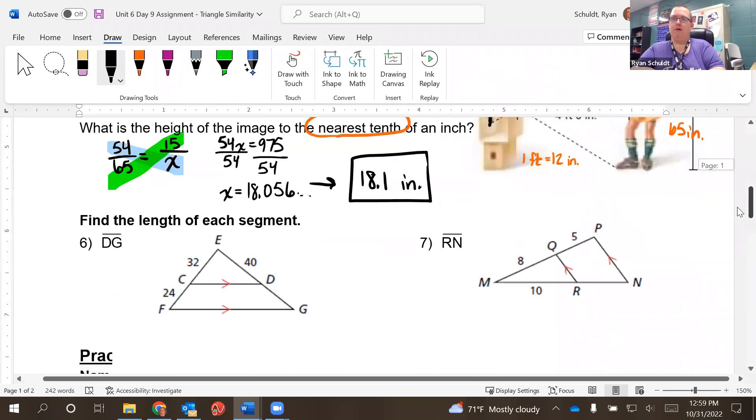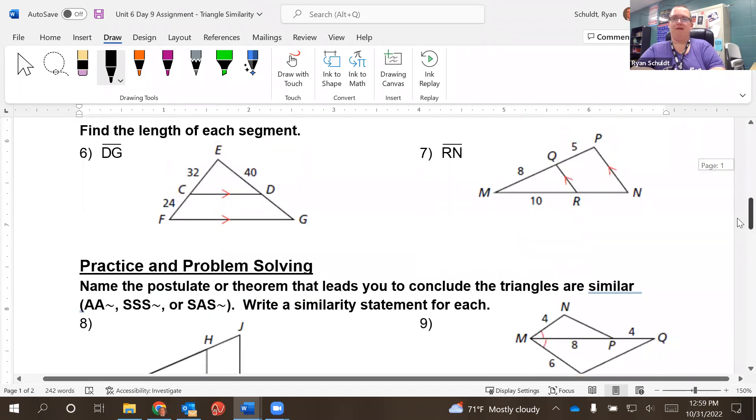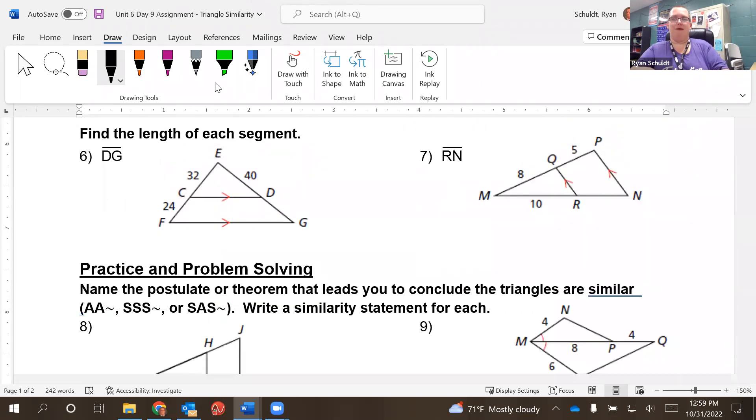Okay. Let's see. Number six. Find the length of the segment. So six asks us to find the length of DG. Okay. Remember, this is where they're proportional. So we can say 32 over 24 equals 40 over X and cross multiply.